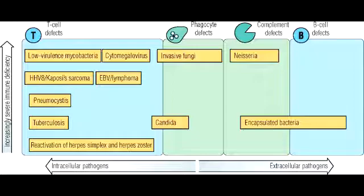Name the common bacterial infections seen with granulocyte deficiency. With granulocyte deficiency, you see infections with Staphylococcus, Burkholderia cepacia, Serratia, and Nocardia.